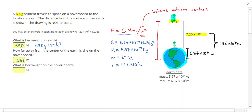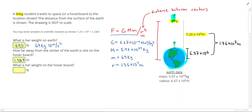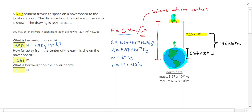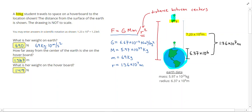I plug G times M times little m divided by r squared into the universal law of gravitation. If you have access to a computer calculator, I highly recommend using Desmos scientific calculator. Plugging that in, I get 10.149 newtons. I feel good about this answer because I know that the farther away from Earth you travel, the lower your weight will be.